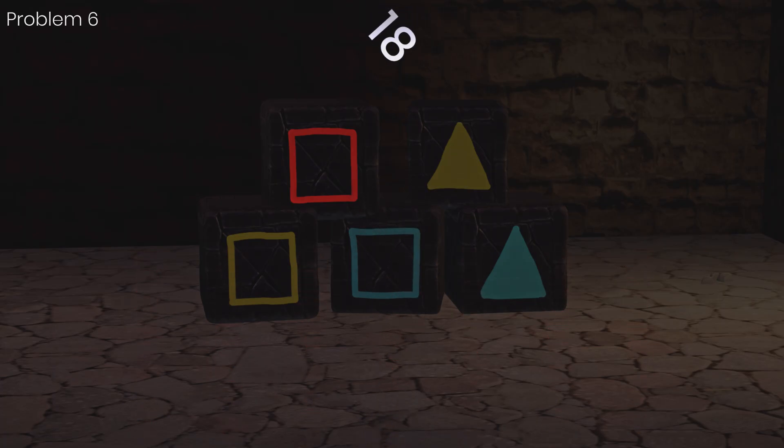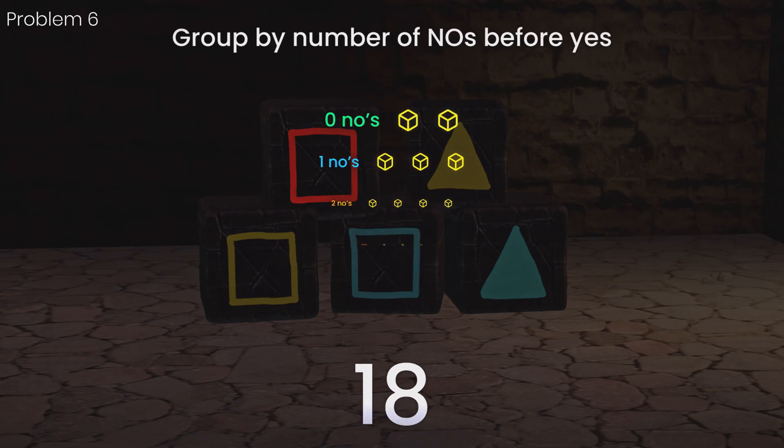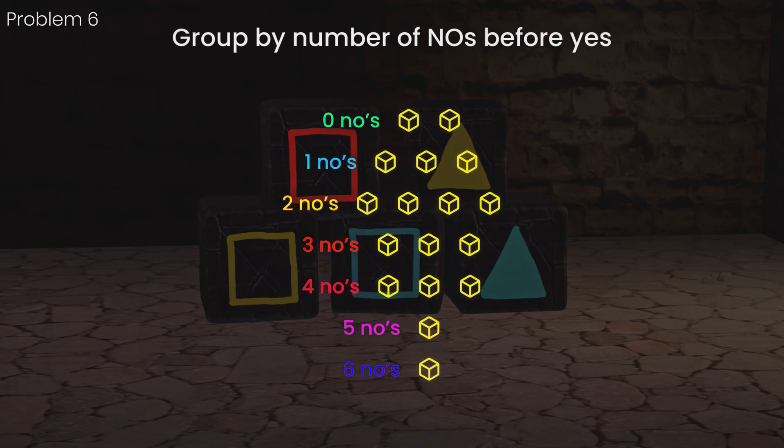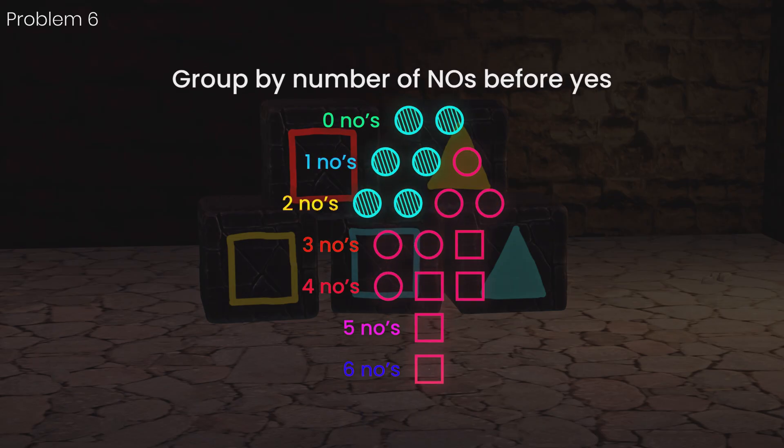We already know that the prisoners will respond with seven no's in 24 of these, so we only need to calculate 18 cases. For each case, we will write the number of no's we expect to get. This will help us group cases with the same responses from the prisoners and pick the box with the highest probability.